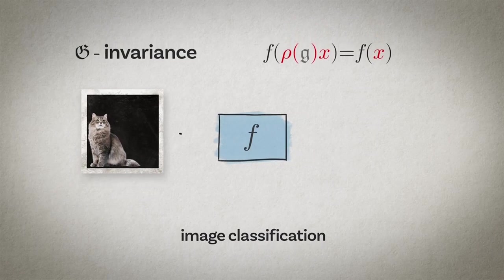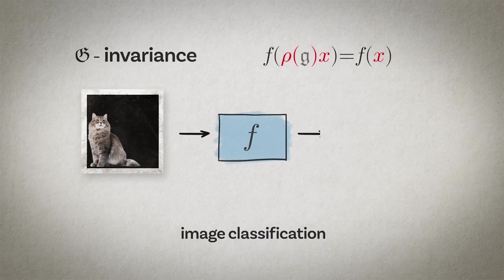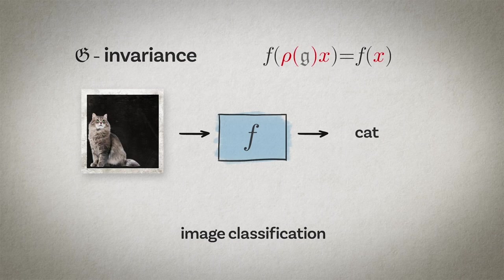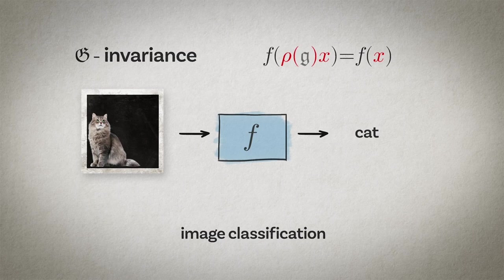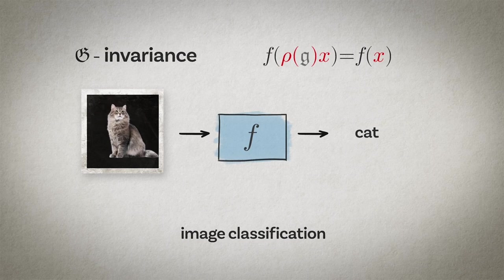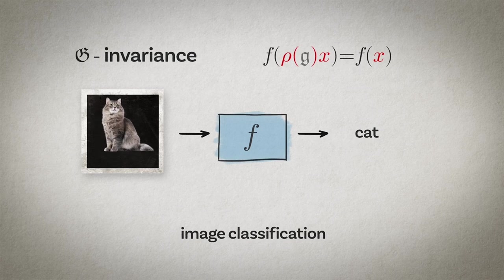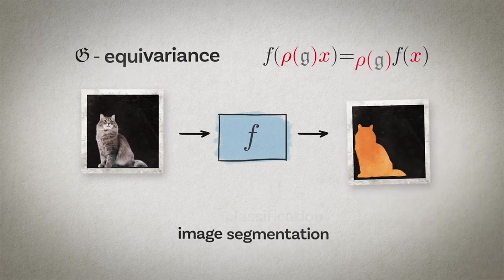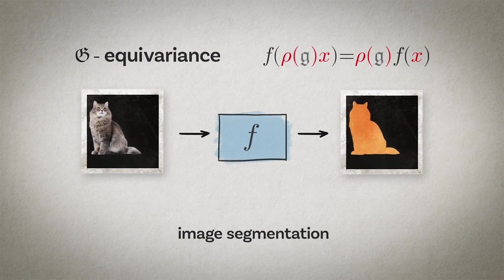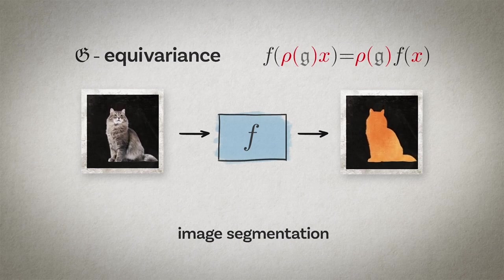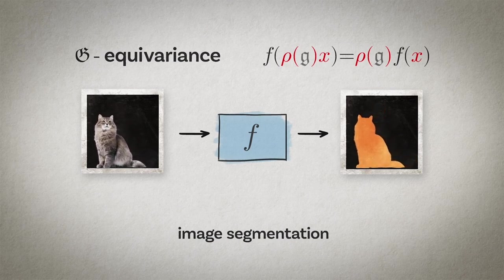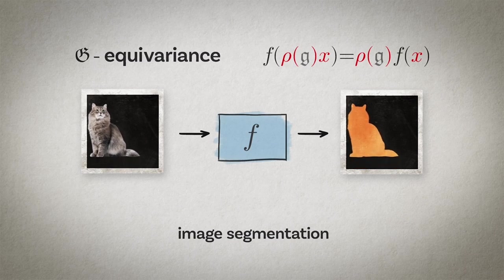This geometric structure of the domain underlying the input signal imposes structure on the class of functions f we are trying to learn. We can have functions that are unaffected by the action of the group, what we call invariant functions, and a good example is the image classification problem. No matter where the cat is located in the image, we still want to say it's a cat. So this is an example of shift invariance. On the other hand, we can have a case where the function has the same input and output structure. For example, image segmentation, where the output is a pixel-wise label mask. We want the output to be transformed in the same way as the input, or what we call an equivariant function. And again, in this example, what we see is shift equivariance.